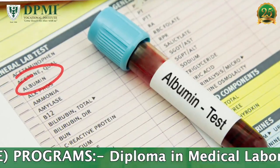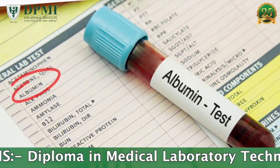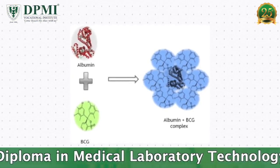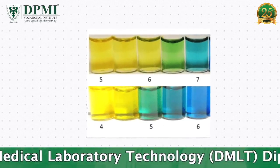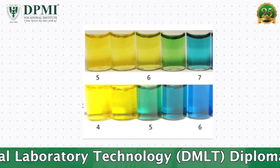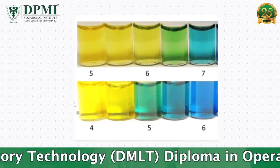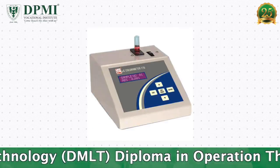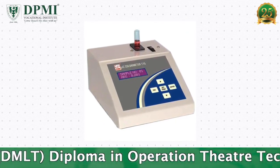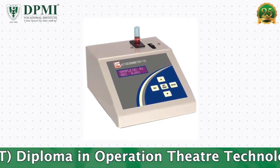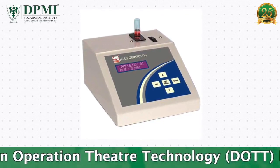Principle: For both manual and automated determination of Albumin, the Bromocrysol Green (BCG) method is used. Albumin present in serum binds with Bromocrysol Green at pH 4.1 to form a green-colored complex, the intensity of which can be measured colorimetrically by using a 640 nm wavelength filter or a red filter.